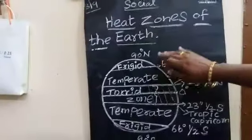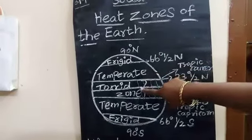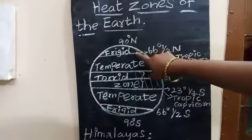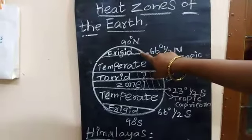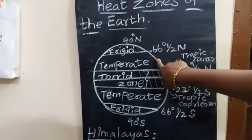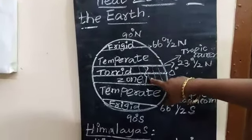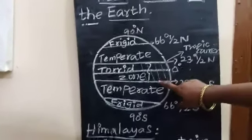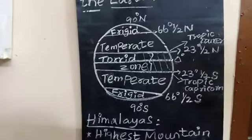So there are three important heat zones: the frigid zone, the temperate zone, and the torrid zone. The frigid zone is covered with ice and receives no sunrays. The temperate zone receives normal temperature. The torrid zone receives more sun and higher temperatures, with sun rays falling vertically.